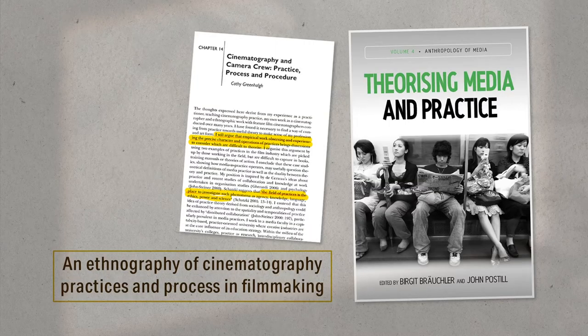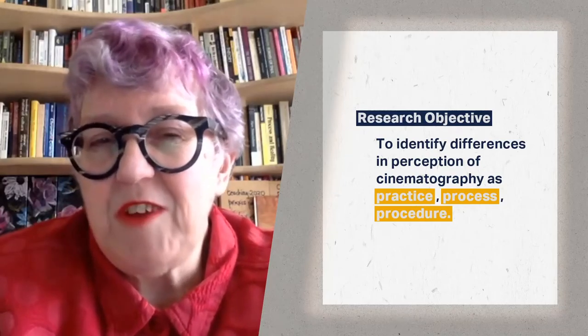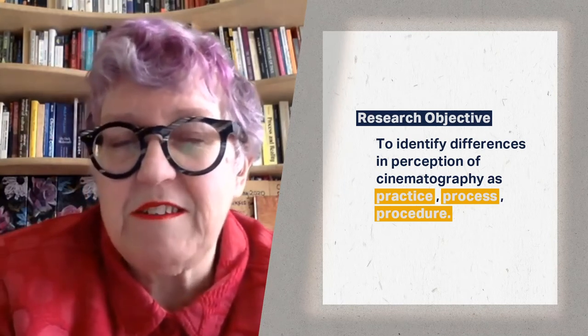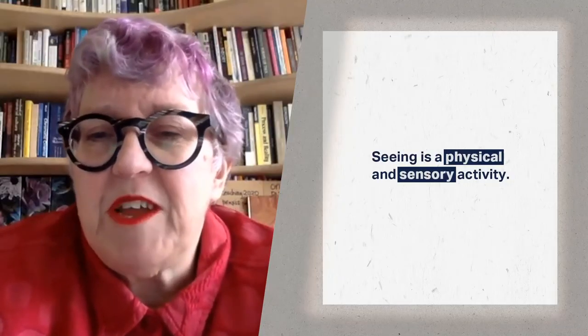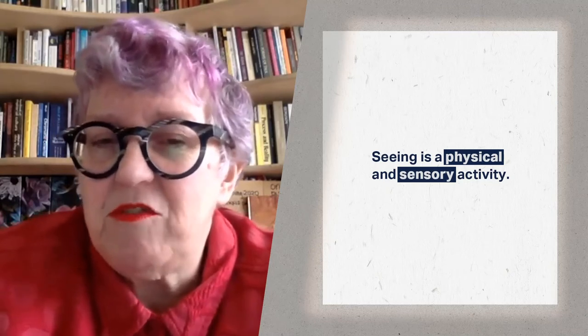Hello. I'm going to talk about some research I did using ethnography, working with ideas which arose from teaching filmmaking, making my own films, and from long-term work with feature film cinematographers. Cinematography is essentially the process of manifesting camera movement, compositional framing and lighting on a film, carried out by the cinematographer or director of photography. I tried to identify the differences in perception of cinematography as practice, process and procedure within the crew on a film. I became fascinated first with how seeing is not just a visual activity, but is corporeal and sensory.